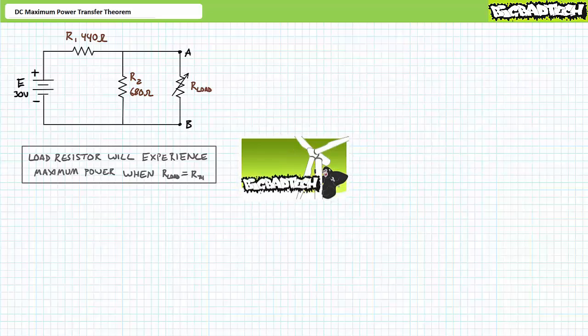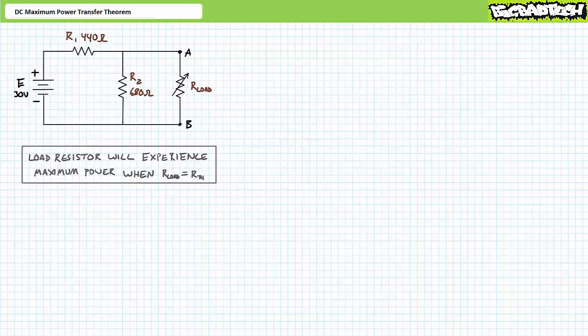This lecture operates under the presumption you're marginally skilled in Thevenin's theorem, and to a lesser degree, Norton's theorem and source conversion. If you're not familiar with these theorems and techniques, please check out those lectures available at the Big Bad Tech channel. Additionally, this lecture makes use of spreadsheet and graphing software, particularly Microsoft Excel, which makes an incredibly handy instructional resource when visualizing circuit properties at or near maximum power conditions.